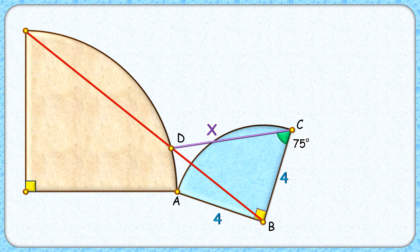Let's check this excellent solution. Let's start by joining CA here. Now ABC is an isosceles right angle triangle. Applying the angle sum property, we get this angle as 45 degrees and this angle here as 45 degrees.